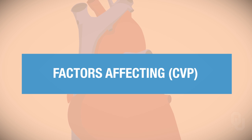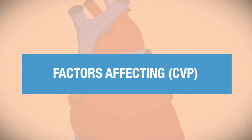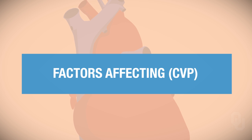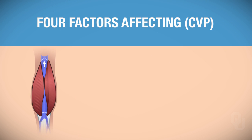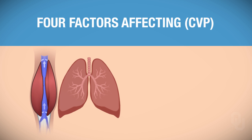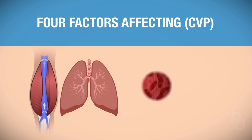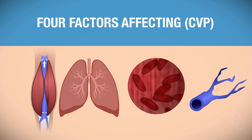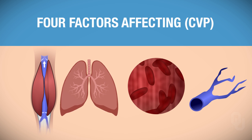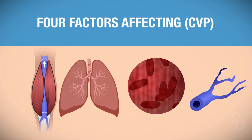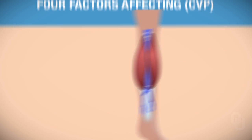In this video, we will focus on the factors that affect the central venous pressure. There are four factors for us to discuss: the skeletal muscle pump, the respiratory pump, blood volume, and venomotor tone. Let's work our way through each one of these, beginning with the skeletal muscle pump.